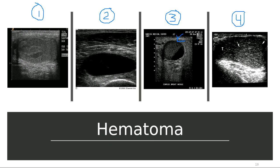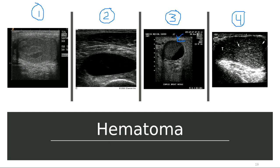It takes days and weeks for a hematoma to be reabsorbed by the body, looking like a hypoechoic mass. To summarize: an active bleed is echogenic; coagulated blood is homogeneous and anechoic, maybe echopenic with a few echoes; hours later you get mixed echogenicity; and days later, more hypoechoic.